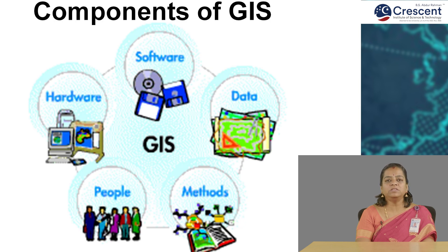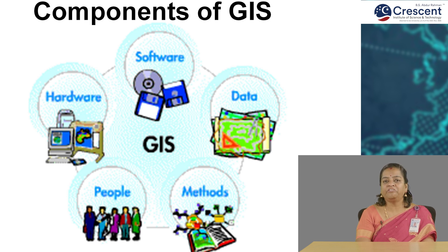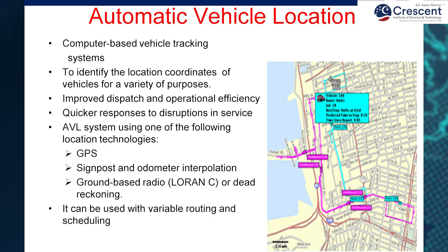The various components of the Geographical Information System require software to work, which requires data. That data should be analyzed with some method, and the methods should reach the people. The people then use the equipment — that is, the hardware. Let us now see the various applications of Geoinformatics in transportation one by one.